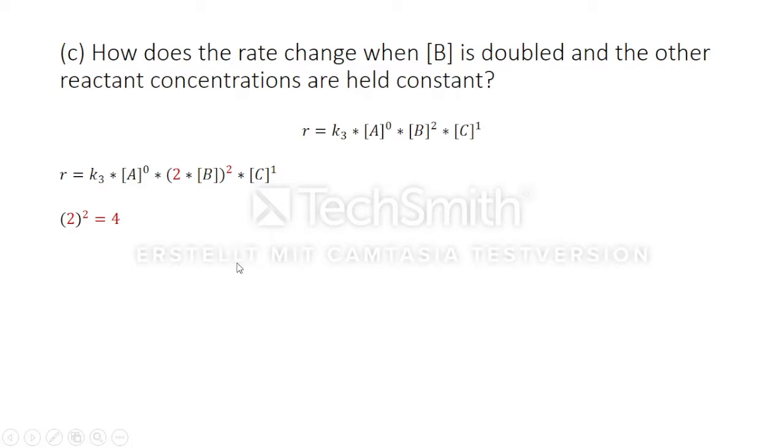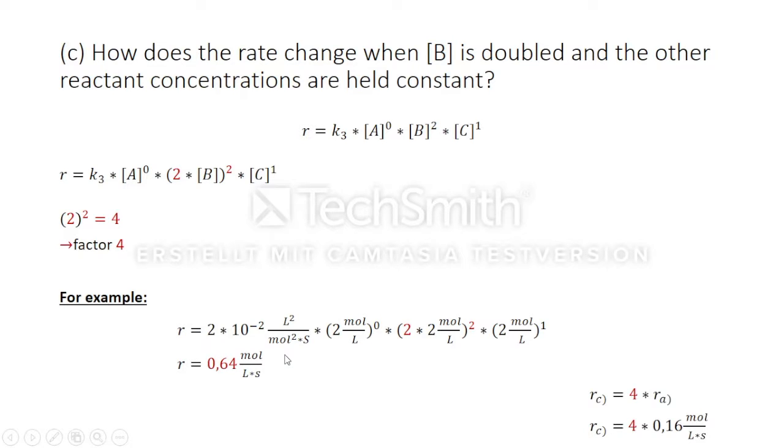Now the rate is four times faster in the example. Therefore, the rate is four times zero point one six, which equal to zero point six four.